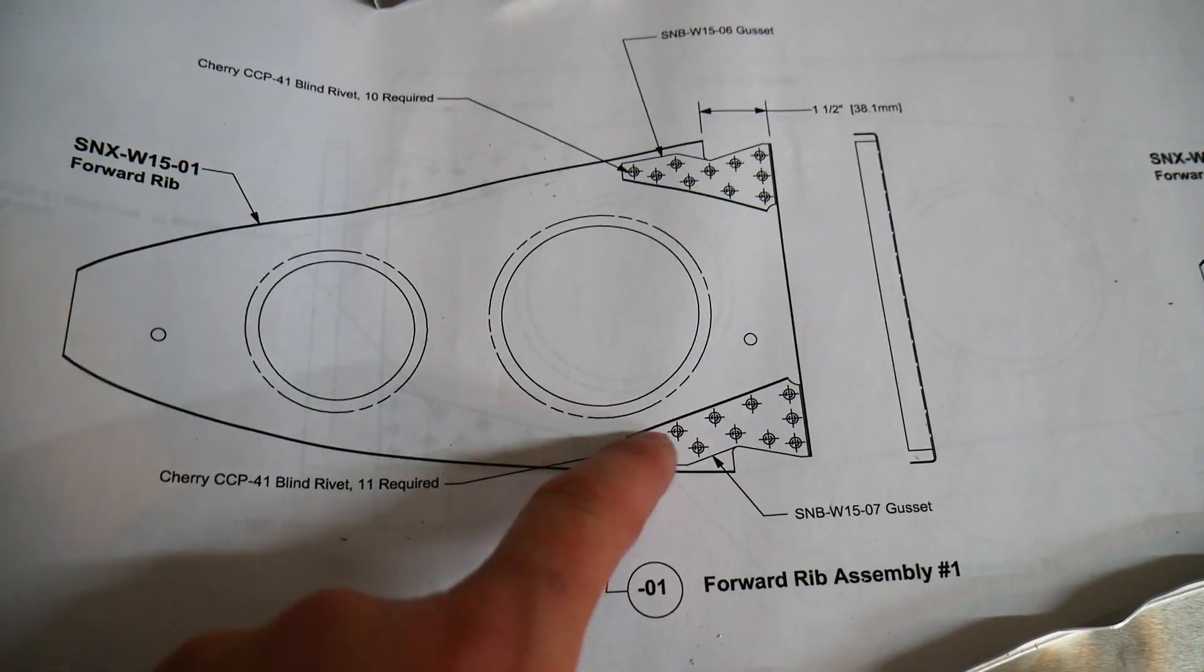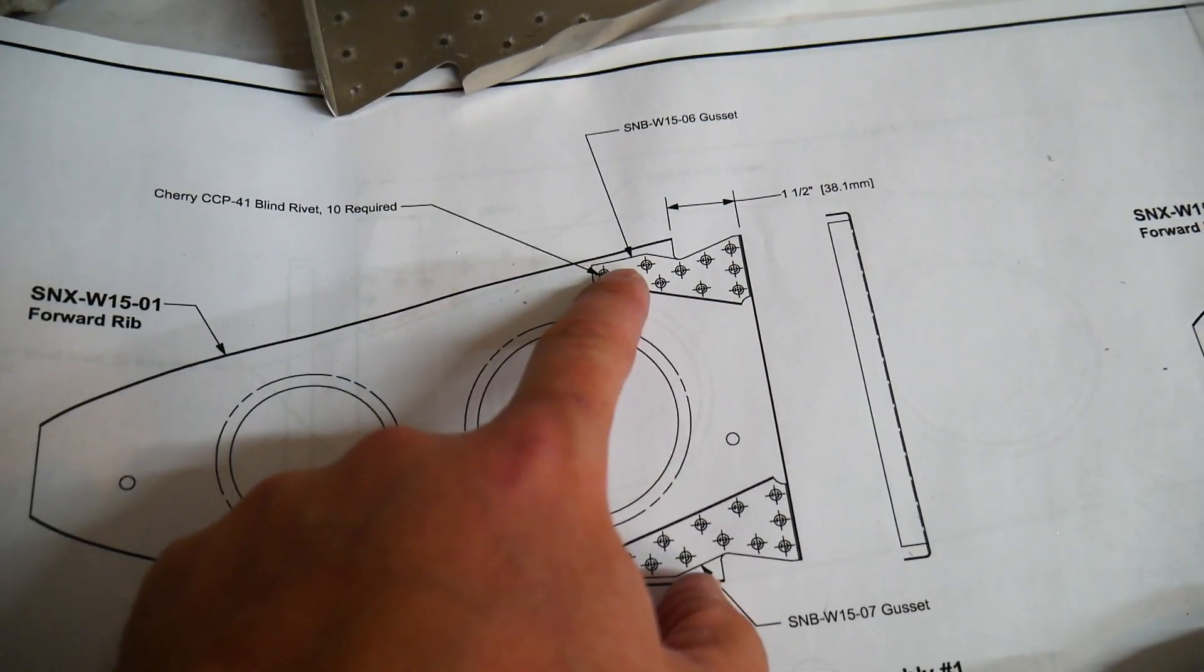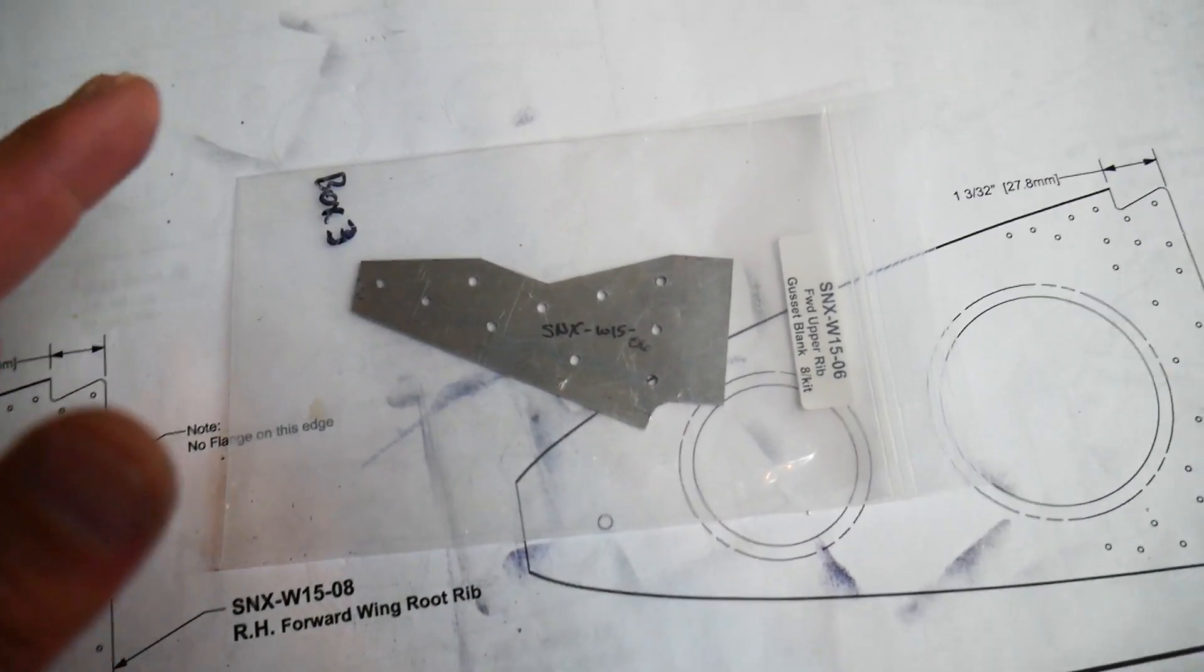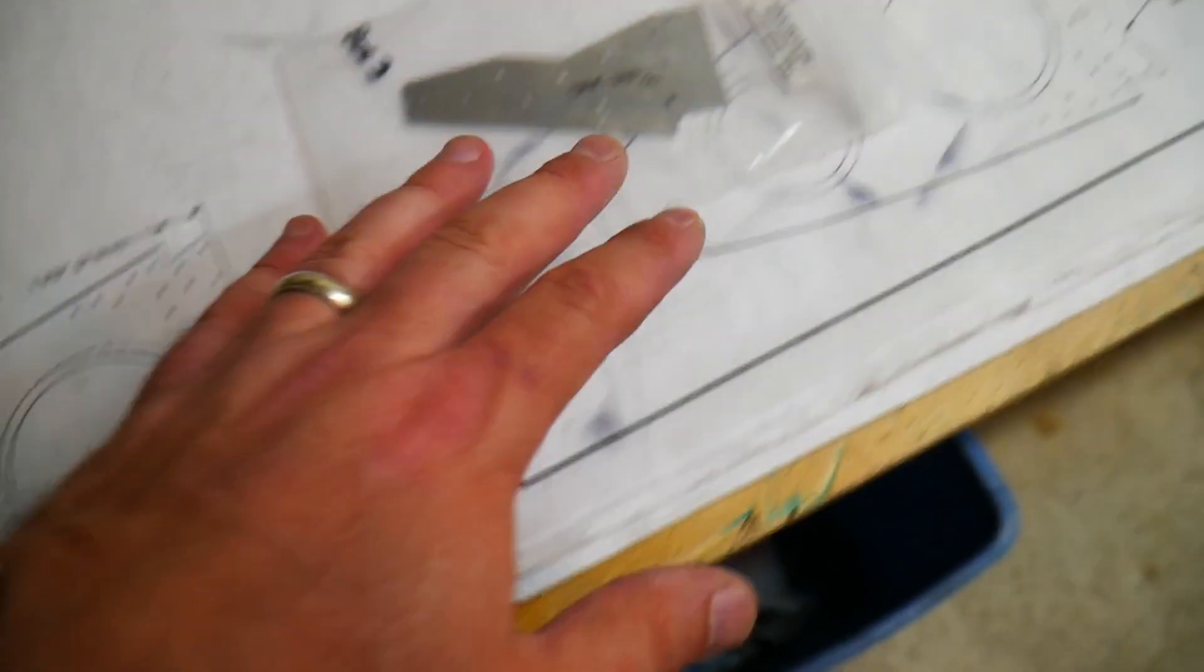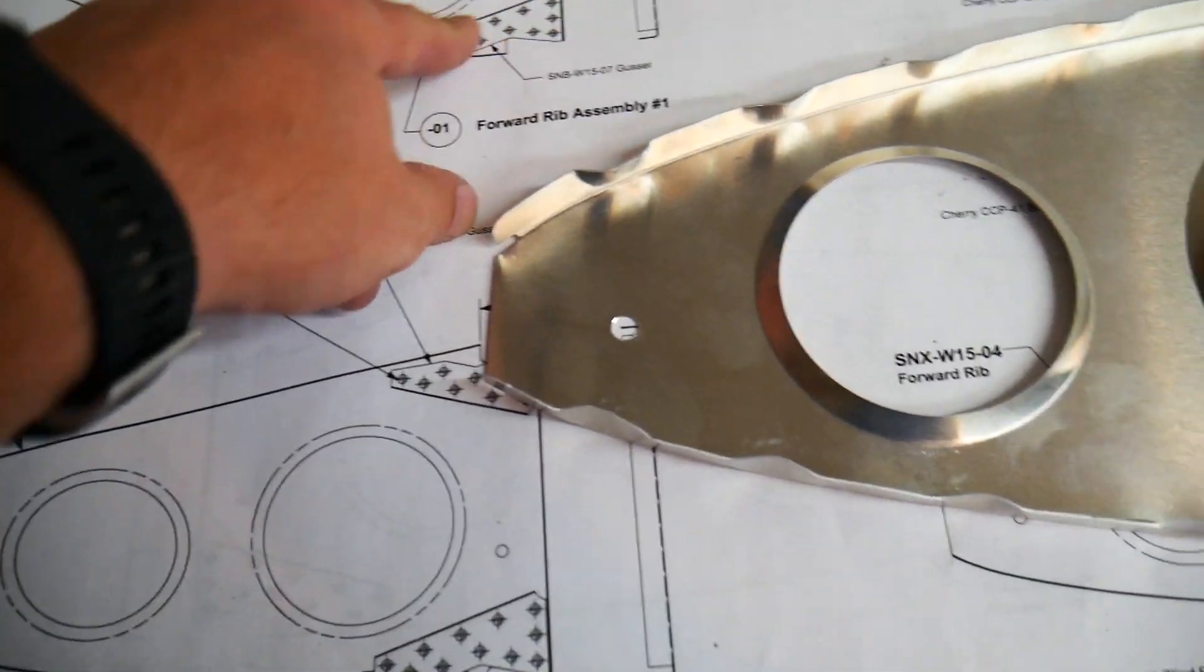Here's an example. There's a gusset here that doubles the strength right on this edge and then another one up here. They come in a little bag like this. I haven't done anything with this one yet. It comes with eight of these as well as eight of the opposite ones. These are the ones that go up here on the top and then I have eight more that went down here on the bottom.